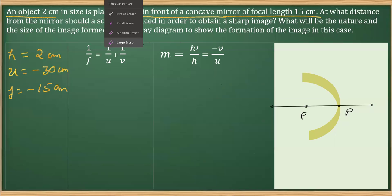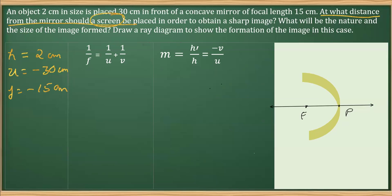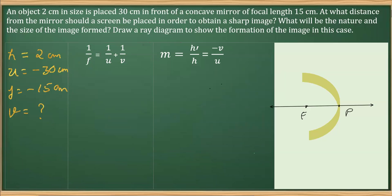Now reading further, it asks at what distance from the mirror should the screen be placed. Only a real image is formed on a screen, so the screen distance is the same as the image distance — this is what we need to find to make a sharp image. Using the mirror formula, 1/f = 1/u + 1/v, we substitute: 1/f = -1/15 and 1/u = -1/30.